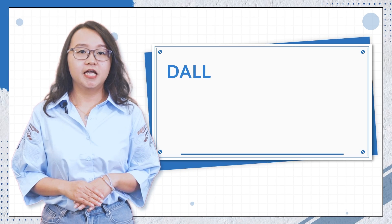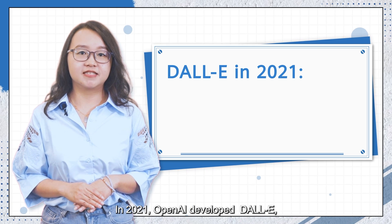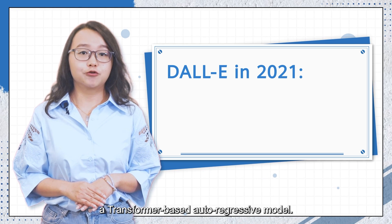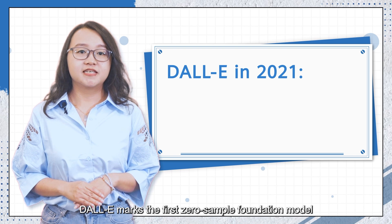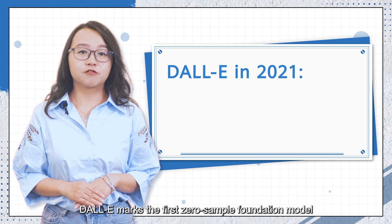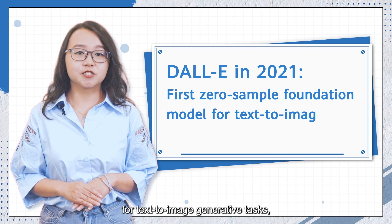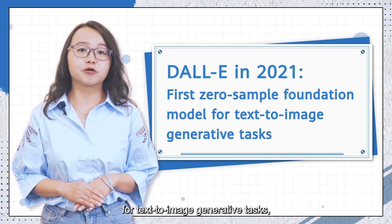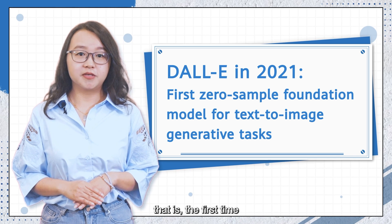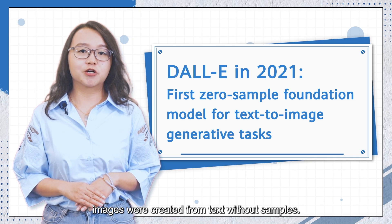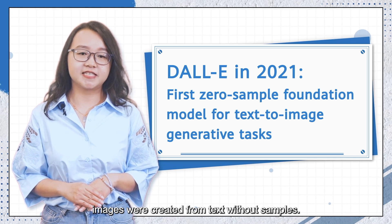In 2021, OpenAI developed DALL-E, a transformer-based autoregressive model. DALL-E marks the first zero-shot foundation model for text-to-image generative tasks — that is, the first time images were created from text without samples.